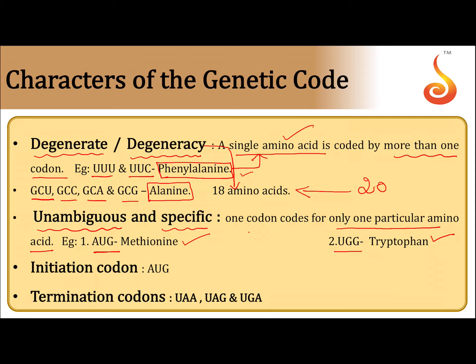The initiation codon is always AUG. AUG can perform two functions: first, it codes for methionine amino acid, and second, it starts protein synthesis. Termination codons are otherwise called stop codons or nonsense codons.